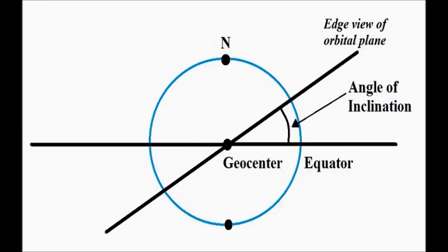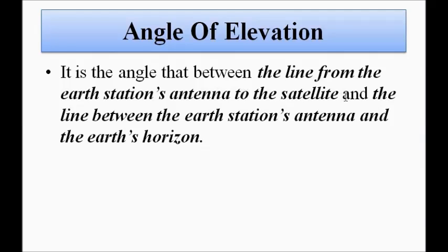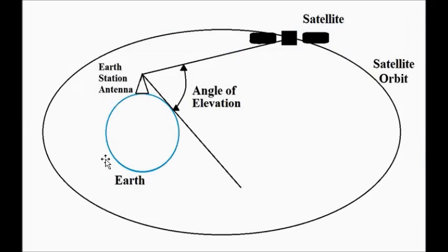The next parameter is the angle of elevation. Looking at this figure, we can see Earth with the earth station antenna located on it. The angle of elevation is the angle formed between two lines: the first line starting from the earth station antenna and reaching the satellite, and the second line starting from the earth station antenna along the Earth's horizon. This angle between the line from the antenna to the satellite and the line along the Earth's horizon is called the angle of elevation.